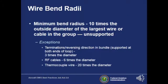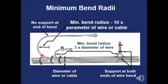Bend radius needs to be 10 times the outside diameter of the largest wire if the group of wires is unsupported. If the bundle is supported, the bend radius is minimized to three times the diameter of the largest wire. Here's a picture: a wire has broken out from the bundle and returned to the termination. Over one section there's a tie but no support, so the minimum bend radius is 10 times. In another section with supports on both sides, the bend radius only needs to be three times the diameter.